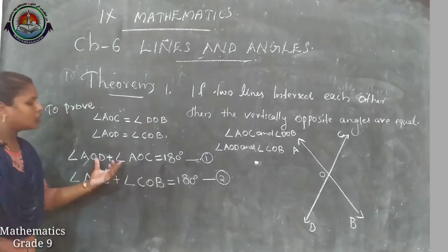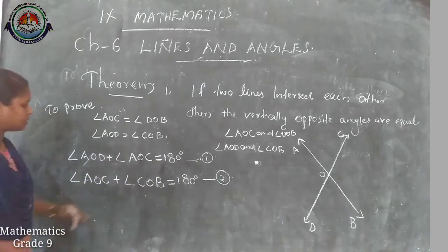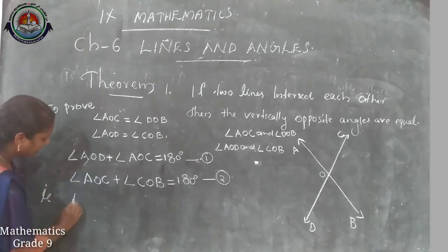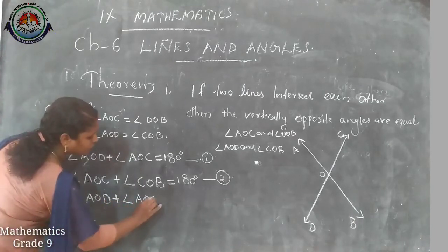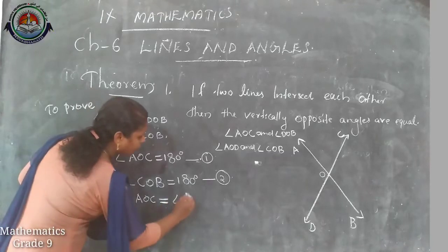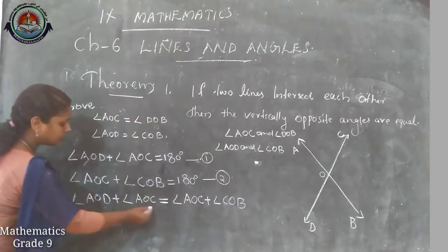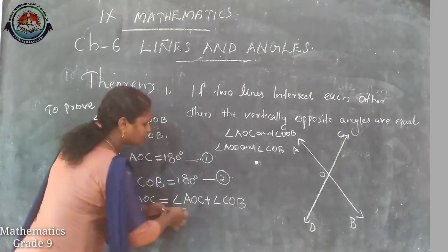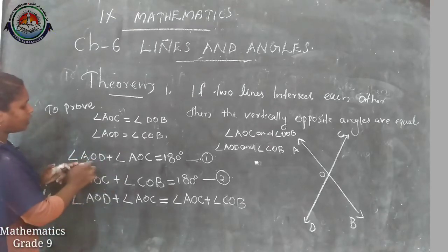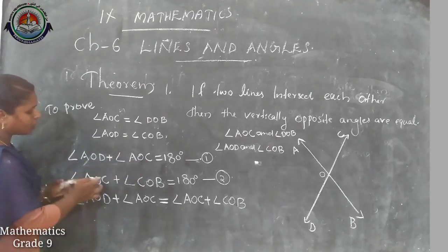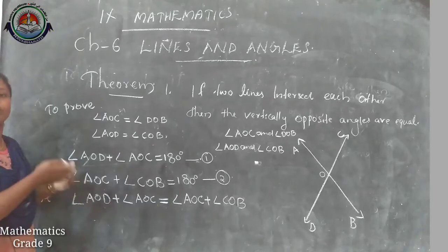Since both pairs of angles sum to 180 degrees, we can equate the two equations: angle AOD plus angle AOC equals angle AOC plus angle COB. Since angle AOC is common to both sides, we can remove it from both sides.